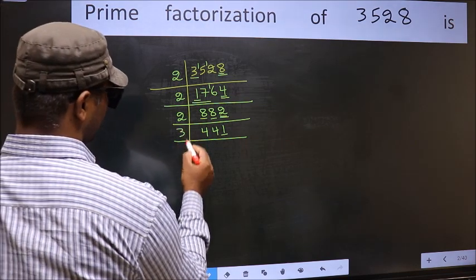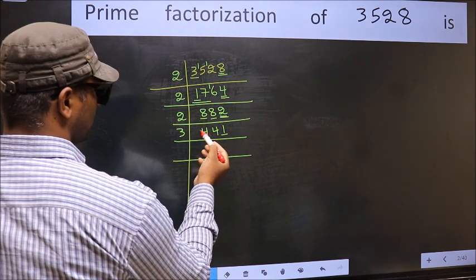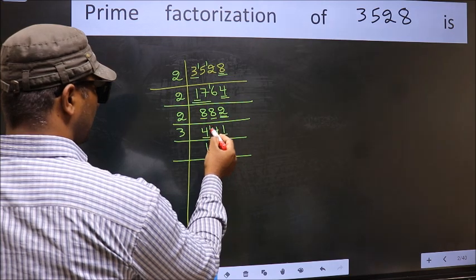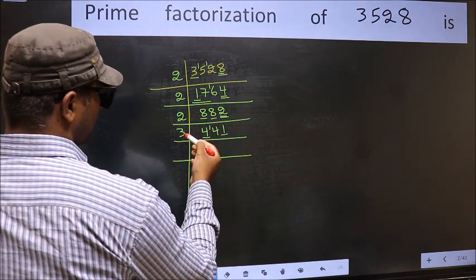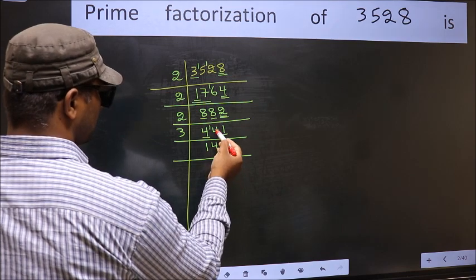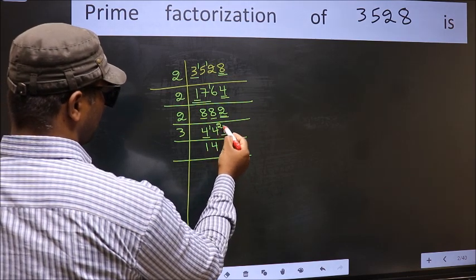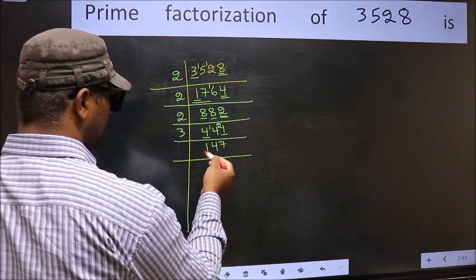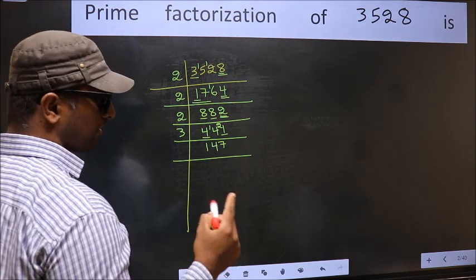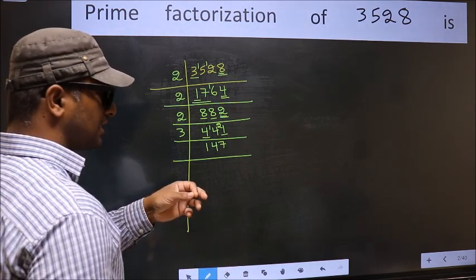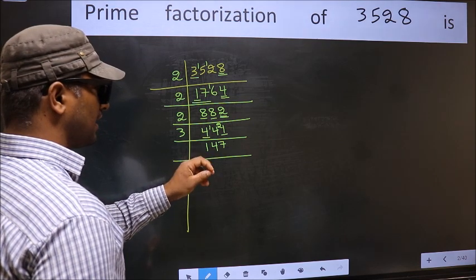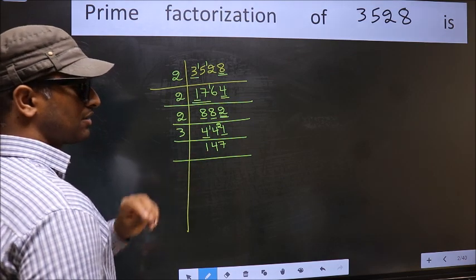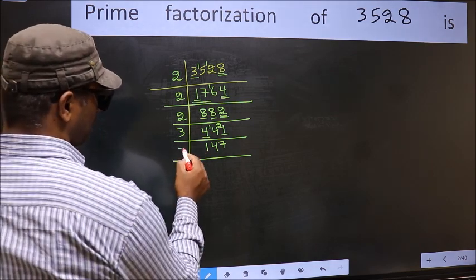Next prime number: 3. To check divisibility by 3, we should add the digits. 4 plus 4 plus 1, we get 9, and 9 is divisible by 3. So this number is also divisible by 3. So take 3 here. First number 4 — a number close to 4 in the 3 table is 3, 1's 3. 4 minus 3 is 1, 1 carried forward 14. A number close to 14 in the 3 table is 3, 4's 12. 14 minus 12 is 2, 2 carried forward 21. We get 21 in the 3 table: 3, 7's 21. So 441 ÷ 3 = 147.